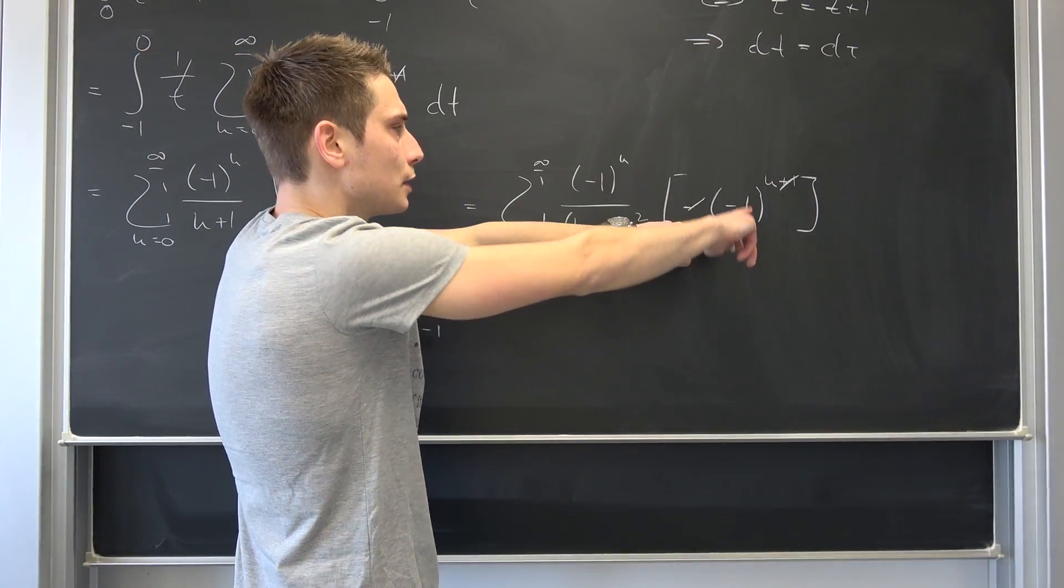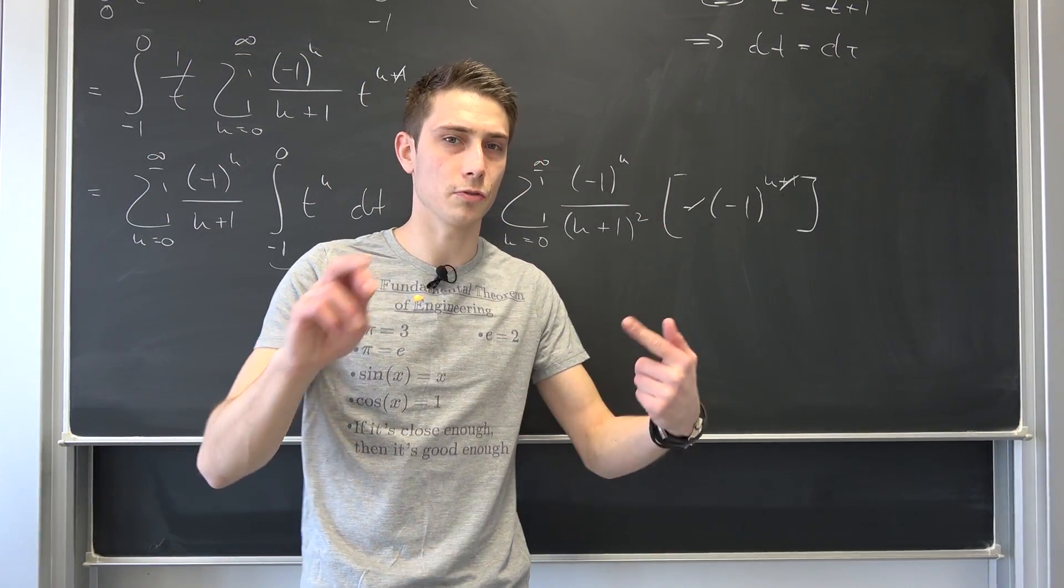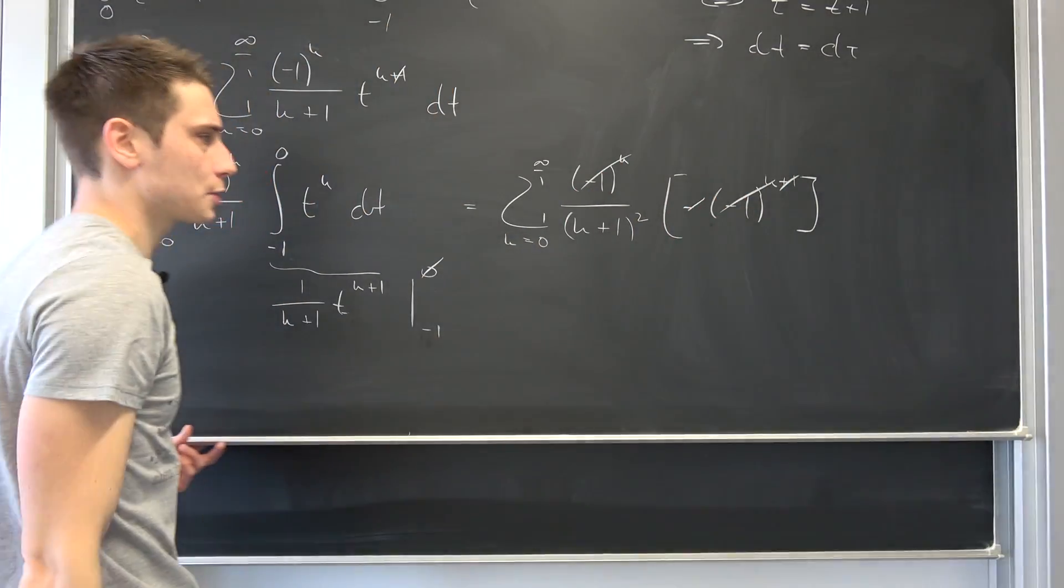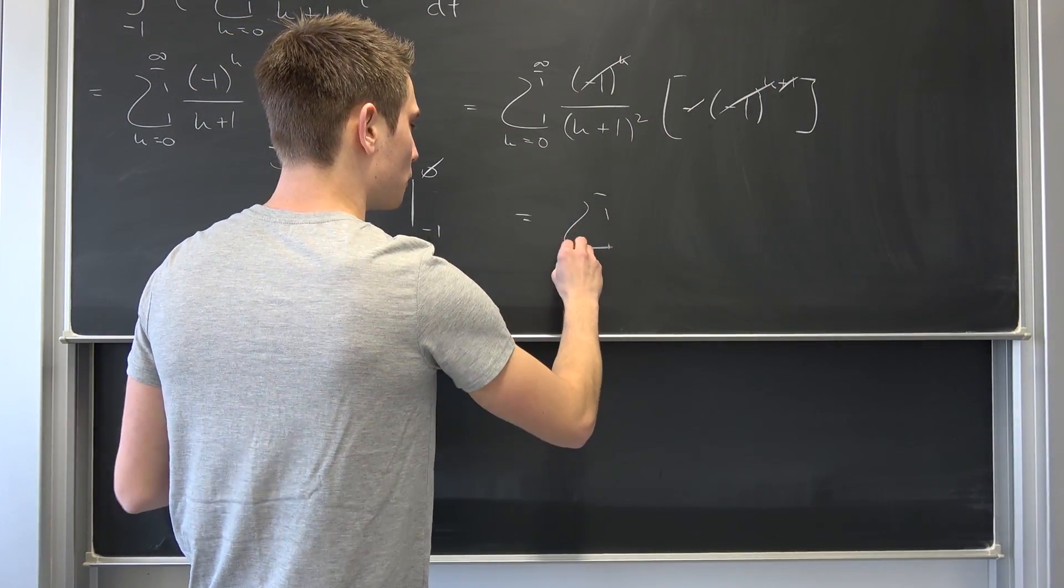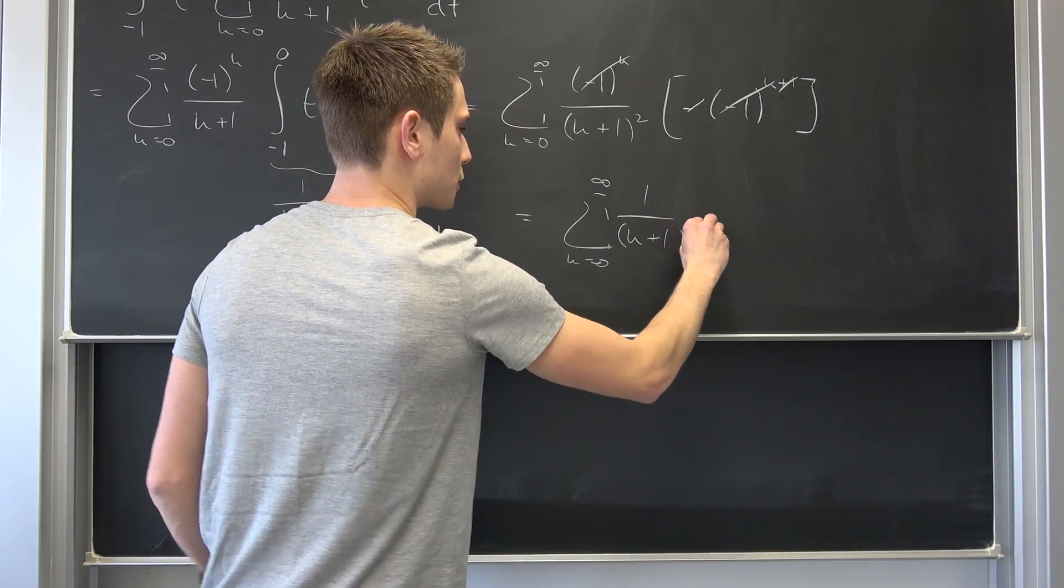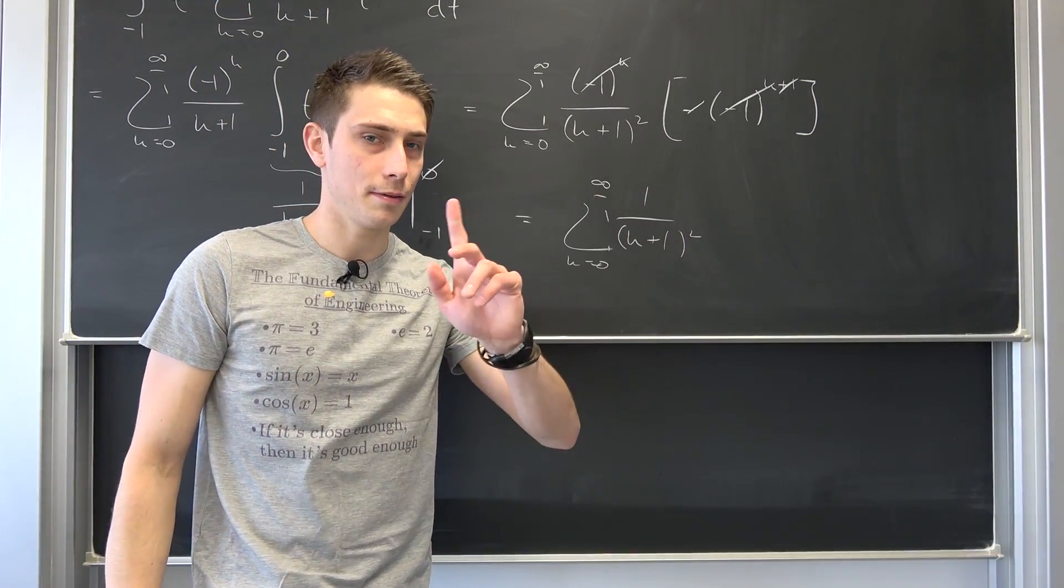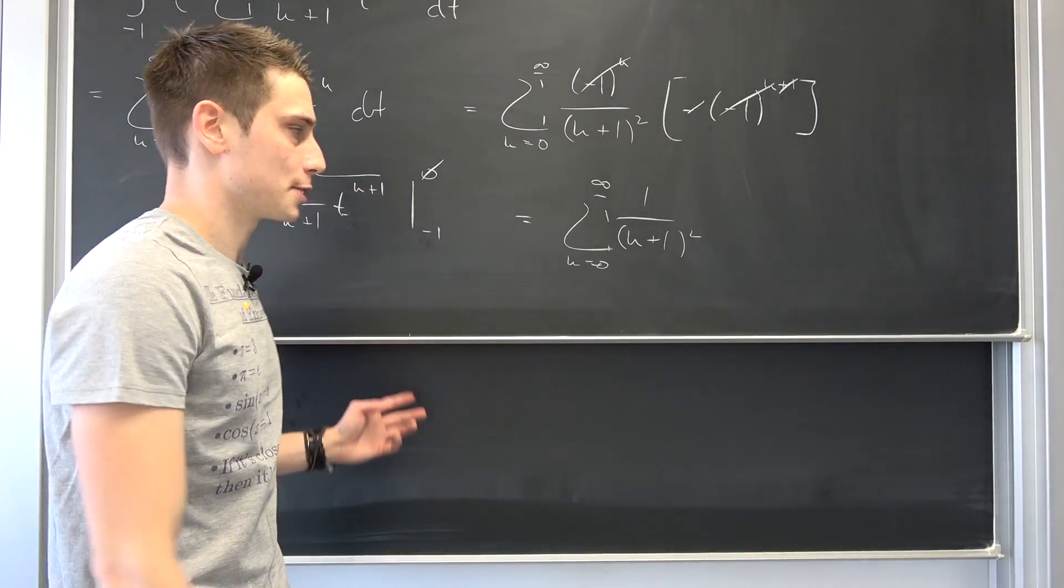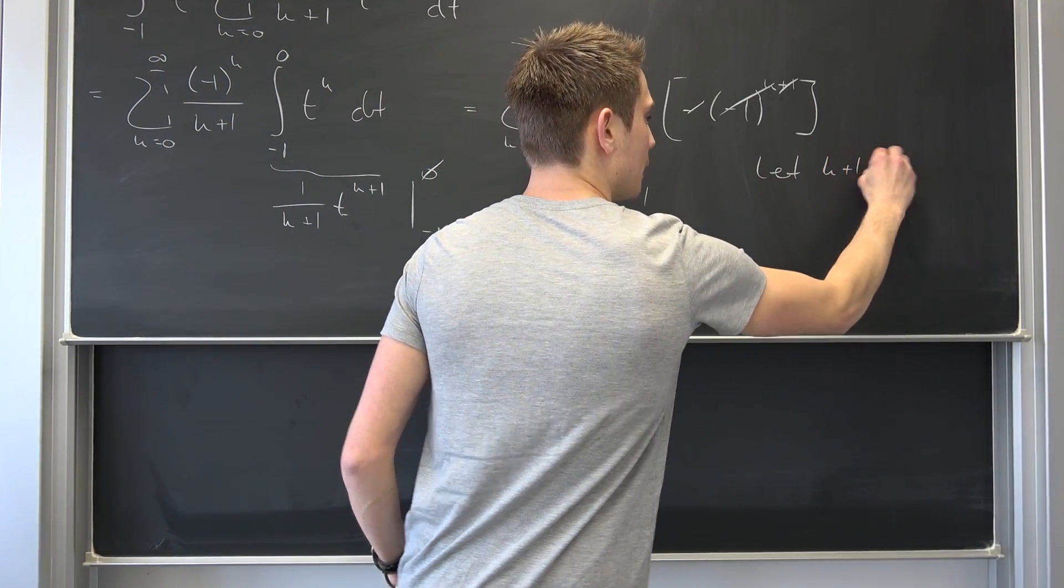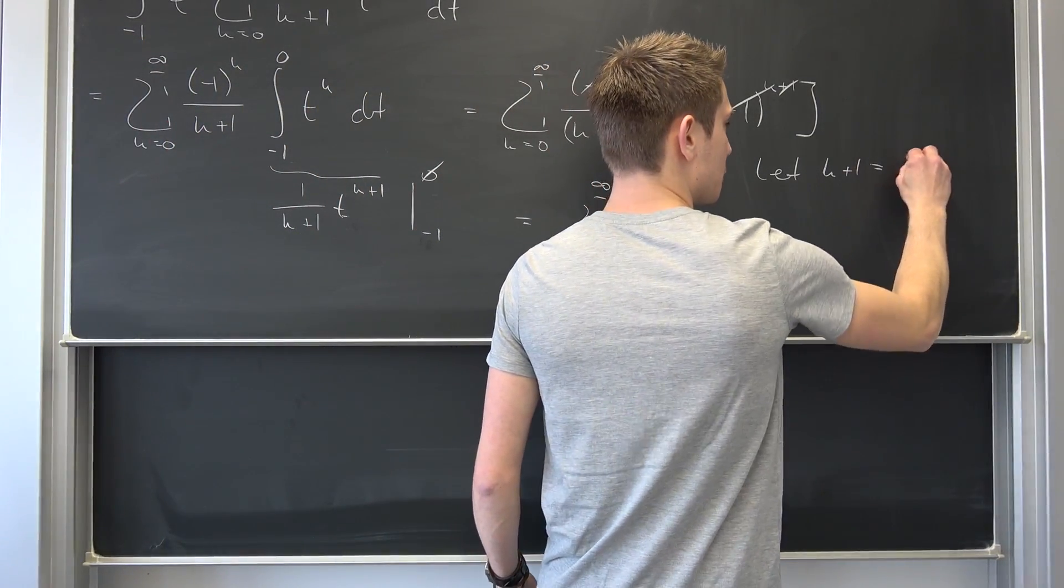So this and this negative is going to cancel out. Also, we are going to get negative 1 to the 2k power. But if we have negative 1 to an even power, it's always going to be positive 1. So this right here is actually just a positive 1. And overall we are going to get a sum running from 0 to infinity of 1 over (k plus 1) squared. What exactly is this? Well, it might not seem too familiar at first sight, but why not say that k plus 1 is now nothing but, let's choose something nice, let's use a little sigma. Okay, k plus 1 is nothing but sigma.